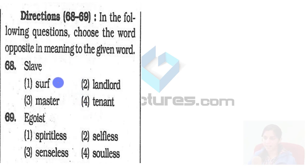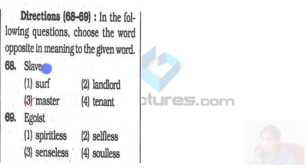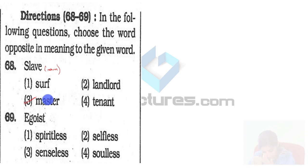Now you have to choose an antonym — a word which means the opposite of the given word. 'Slave' is somebody who works for you, follows your commands, who is legally owned by another person and forced to work for them. 'Master' is the one who gives commands and has people working for them. So the antonym of slave is going to be master.